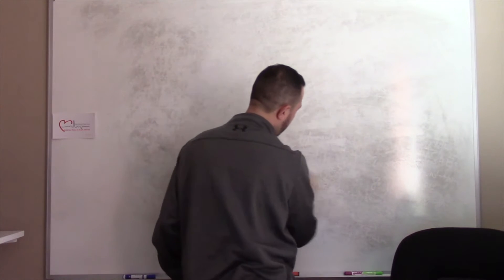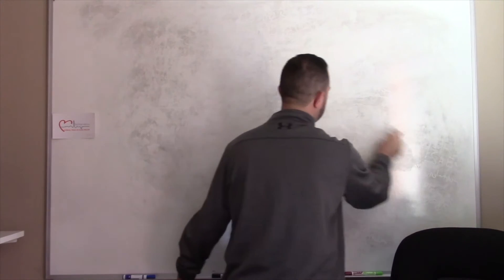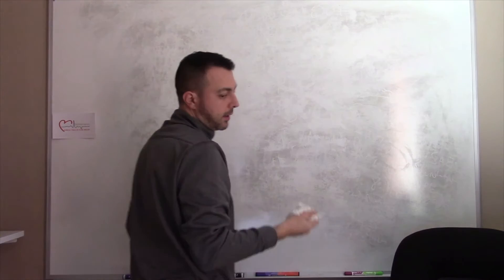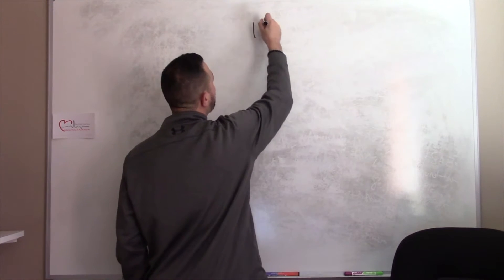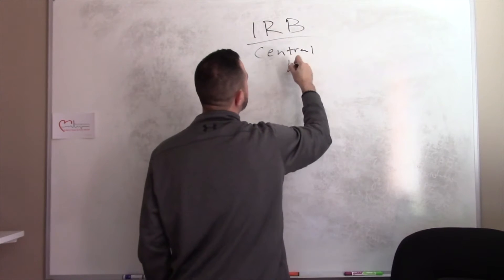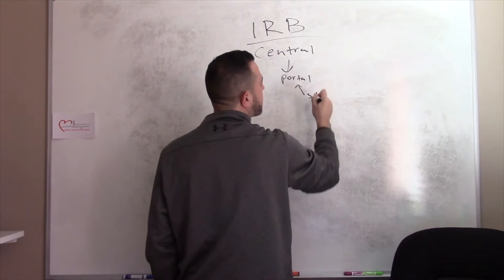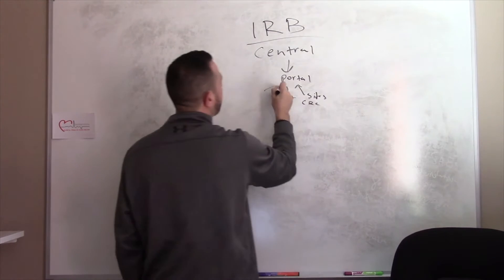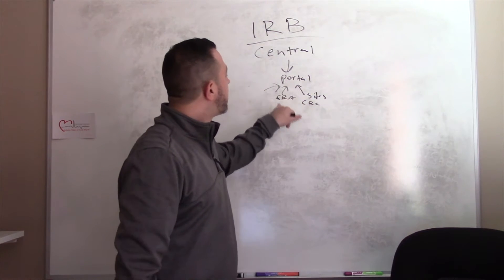The IRB stuff — you're going to know going into it what kind of visit you're doing. Let's go to page three, that's IRB. Usually there's a portal for most central IRBs. Most sites use central IRBs, so there's a portal where the coordinator, CRC, CRA, and sponsor all have access. When an IRB amends a protocol, the sponsor will get it and send it out to the sites.